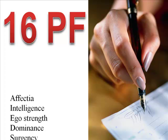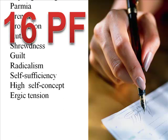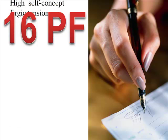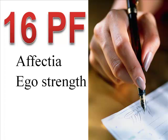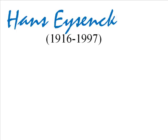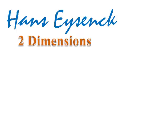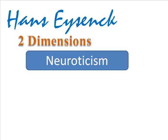Cattell's factors included affectia (outgoing versus reserved), ego strength, emotional volatility, parmia (adventurousness), and surgency, a sort of happy-sad distinction. Cattell wasn't the only one using factor analysis. Hans Eysenck used the statistical technique to reduce personality to two dimensions: neuroticism and introversion or extroversion.